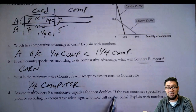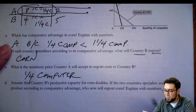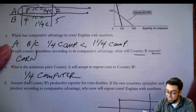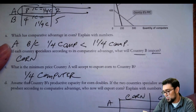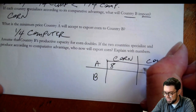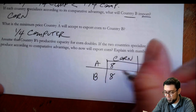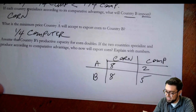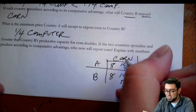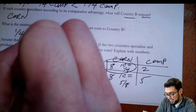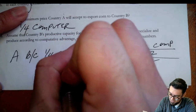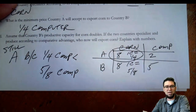Assume country B's productive capacity for corn doubles. Who will export corn? B could now make twice as much corn — instead of four, they can make eight. They still make five computers. So now: one corn for A is still one-fourth of a computer. One corn for B is now five-eighths of a computer. It's still country A that has comparative advantage in corn, because one-fourth of a computer is less than five-eighths of a computer — still A, but by a little bit less.